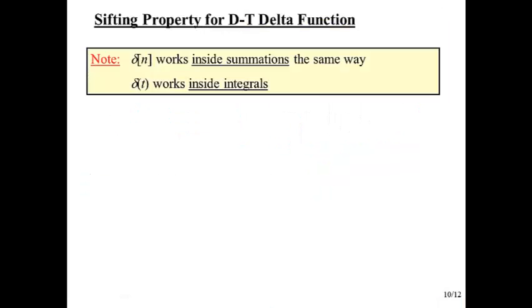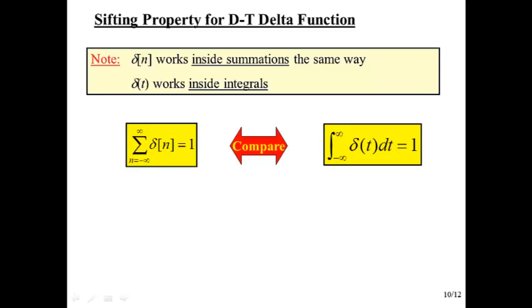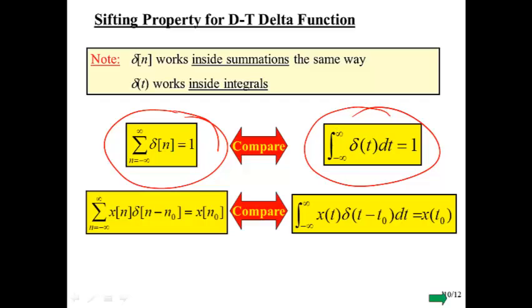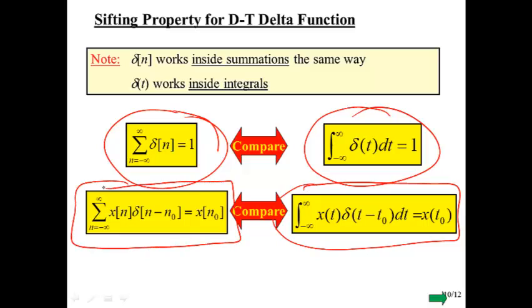We had the sifting property for the continuous-time delta function. For discrete-time, it works exactly the same way, except instead of being inside integrals, it's inside a summation. We have this property that holds for discrete-time. We have this property that holds for continuous-time. This was the continuous-time sifting property. This is its corresponding version in discrete-time. Everything pretty much follows exactly the same way.